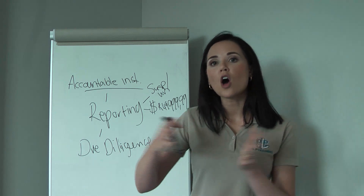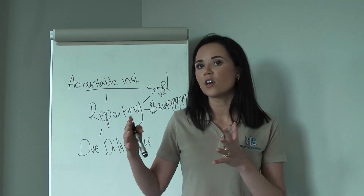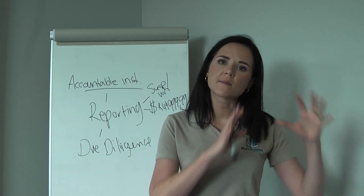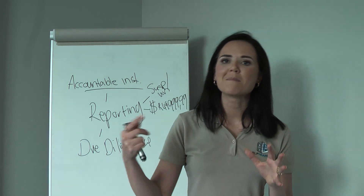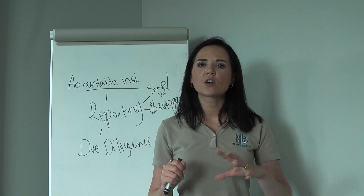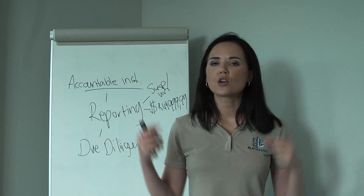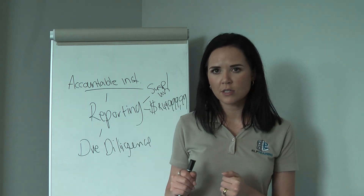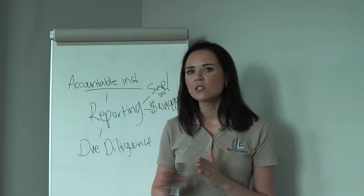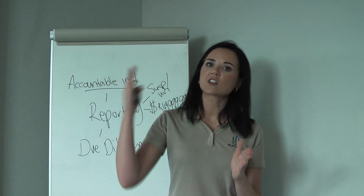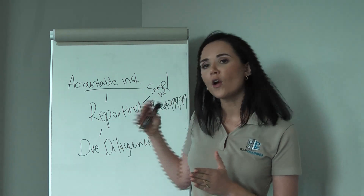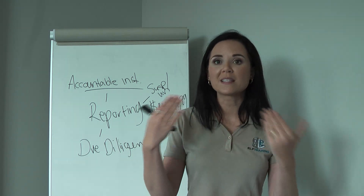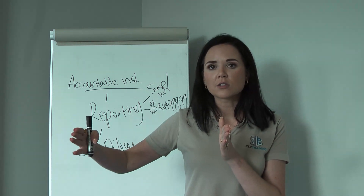An ongoing business relationship is something that is not a once-off event. In the life insurance industry, clients pay a monthly premium; in banking, clients pay monthly banking fees — they don't open an account, deposit money, and close it. It is an ongoing relationship. For single transactions, due diligence must be done before the transaction is concluded; for an ongoing business relationship, due diligence is done when the relationship is first initiated.